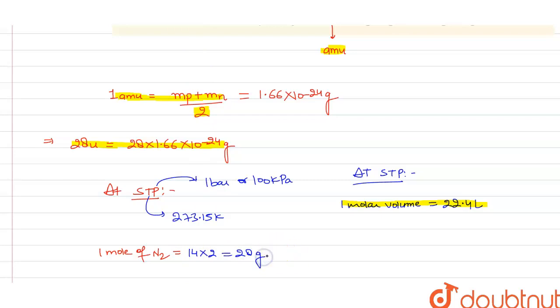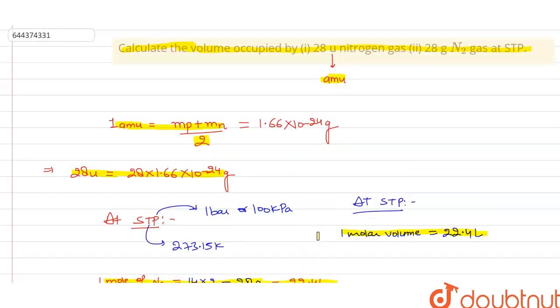And we know that at STP, the one mole of N2 contains 22.4 liter, so it will be equal to 22.4 liter. So from here we can say that 28 gram contains the volume of 22.4 liter. So our second question is asking about the volume occupied by 28 gram of N2 at STP, so it will be 22.4 liter.